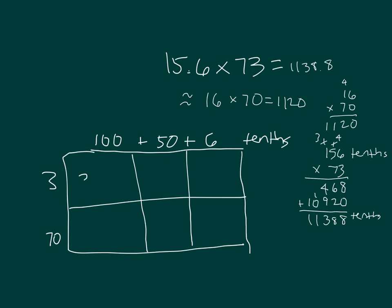We'll break it apart into 3 and 70. 100 times 3 is 300. 3 times 50 is 150. And 3 times 6 is 18. When I add those together, I get 468, which matches.